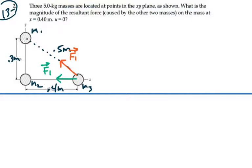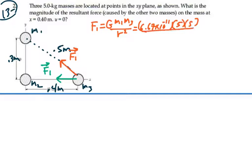Let's find the magnitude of these two forces. F1 is going to equal G mass one mass three over the distance between them squared, which is going to be 6.67 times 10 to the minus 11, giving us 6.67 times 10 to the minus 9 newtons.